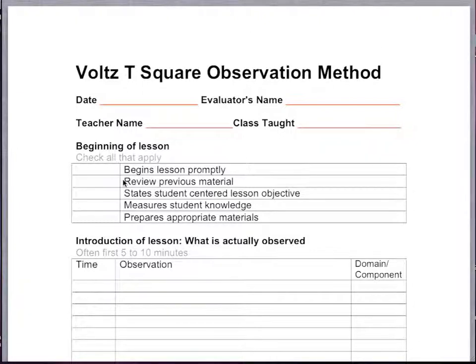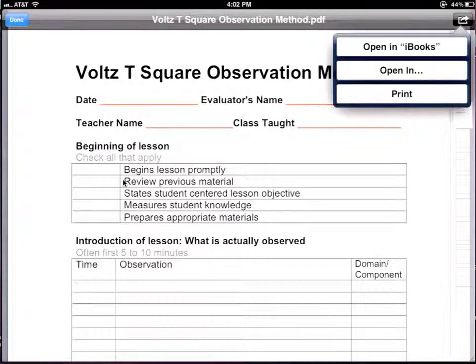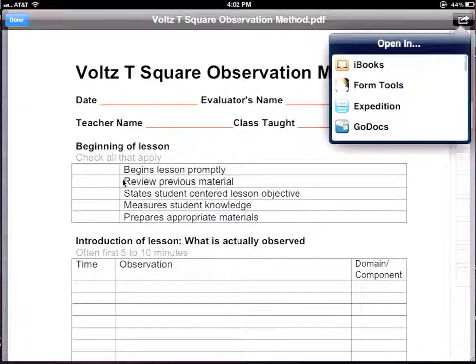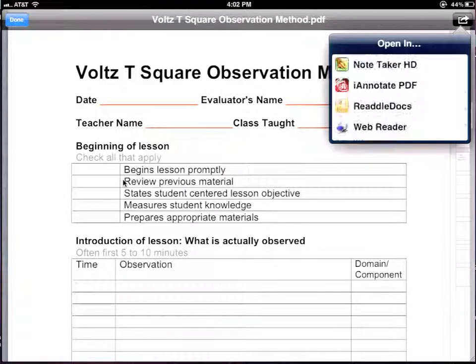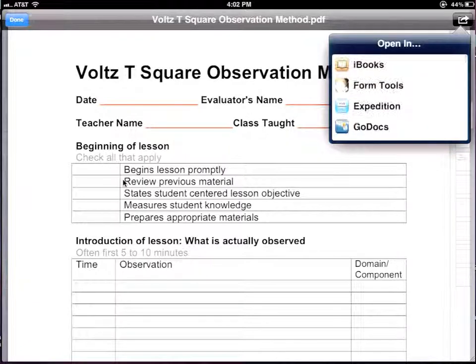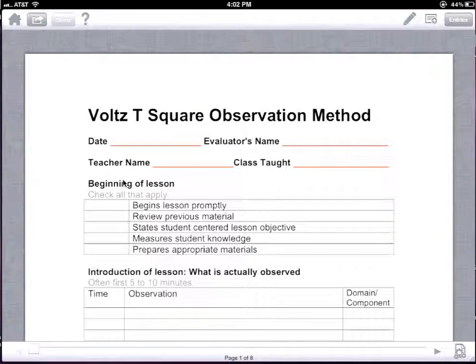I'm just clicking on that PDF, and you can see that it has opened as a PDF. If I touch on the document on my iPad, you'll see in the upper right-hand corner there's a box that says Open in iBooks, Open in, or Print. If I click on Open in, it gives me a variety of applications that I could use to open this PDF. For this case, I'm going to open it in Form Tools. I'm going to click Form Tools, and then that will bring this PDF into my Form Tools. As you can see on the screen, we have this Voltz T-Square Observation Method in our Form Tool.